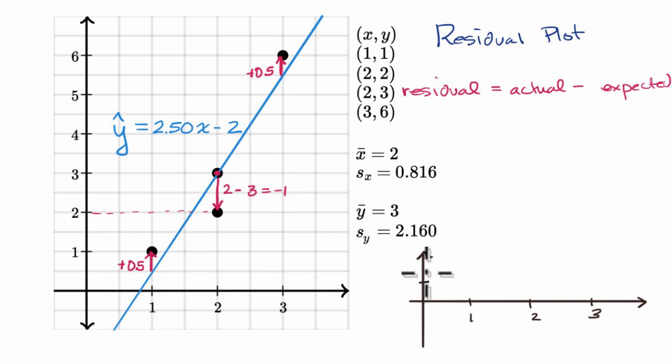So let's see, this could be 0.5, one, negative 0.5, negative one. So this is negative one, this is positive one here.